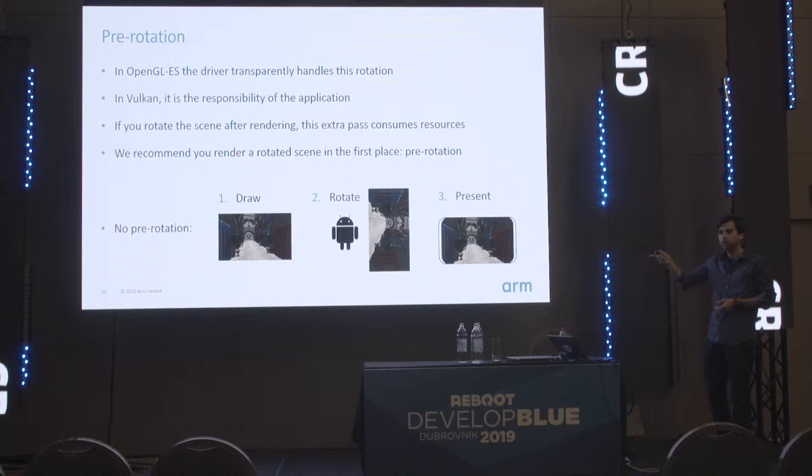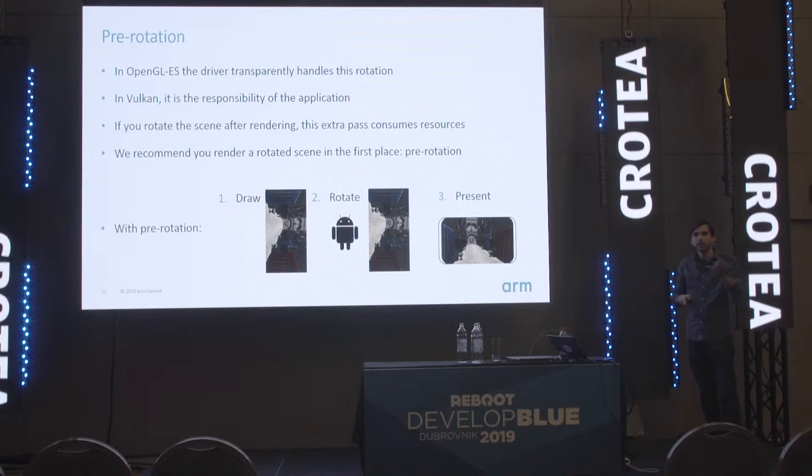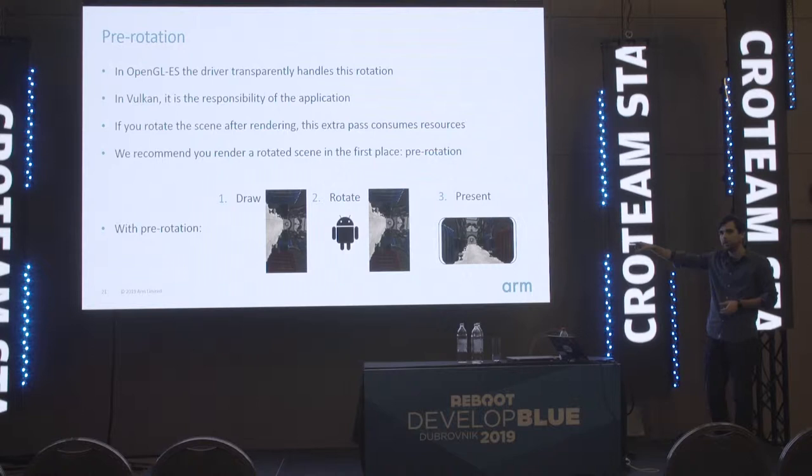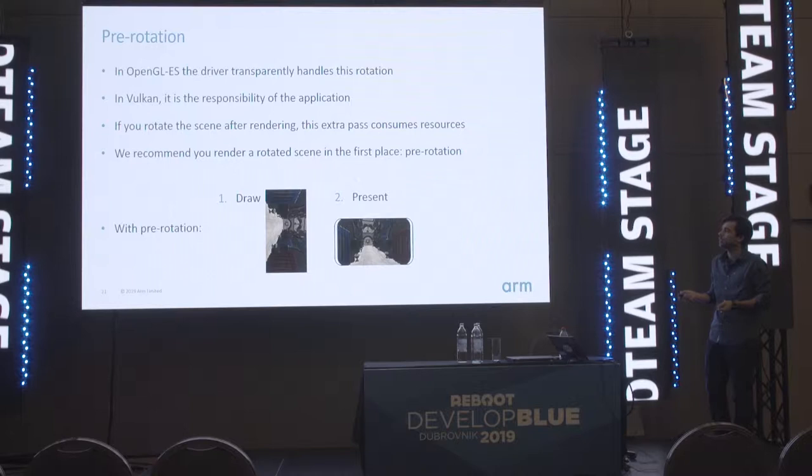The recommendation, therefore, is that you move the rotation to the application — something we call pre-rotation — so you don't need that extra pass. You're basically drawing everything at the new orientation, which makes the compositor pass redundant.